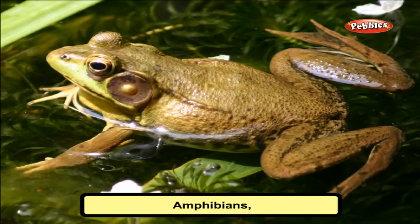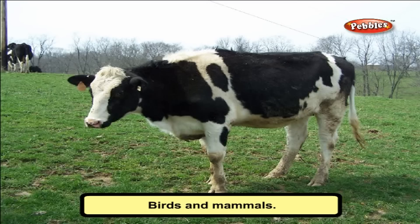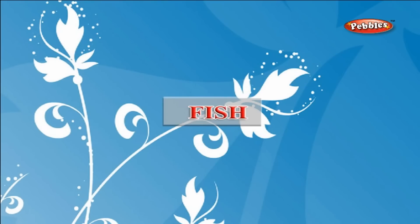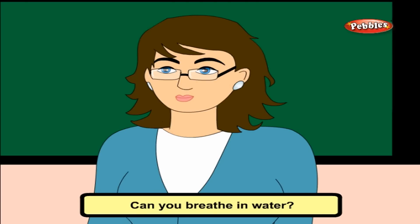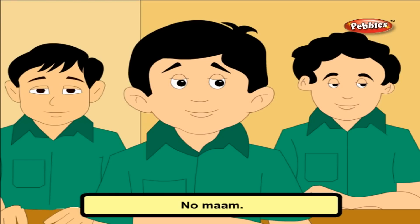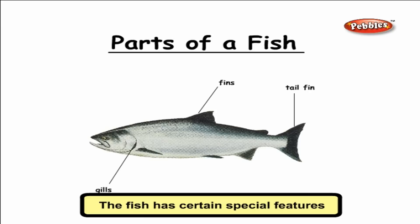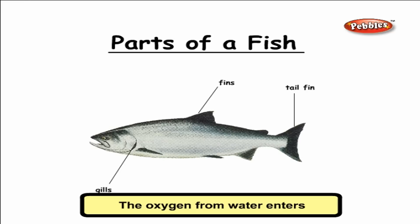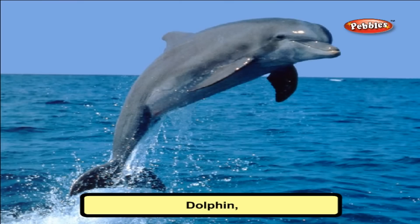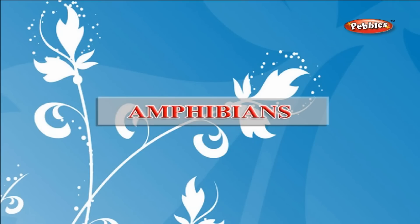Animals with backbone are a more advanced group. They are further divided into smaller groups like fishes, amphibians, reptiles, birds, and mammals. Every group has unique adaptations. Fish cannot breathe outside water — they have certain special features that help them live in water. They have gills to breathe; the oxygen from water enters the body through the gills. Fins and tail help them swim and balance easily. Examples: mackerel, shark, dolphin, tuna, whale.